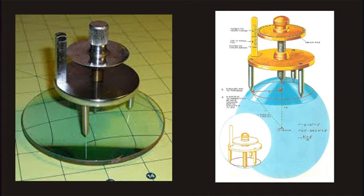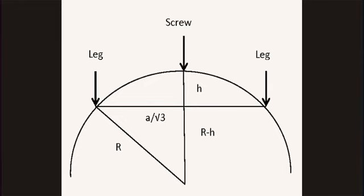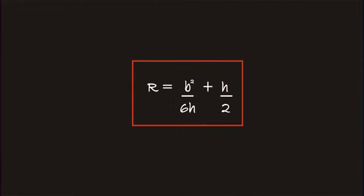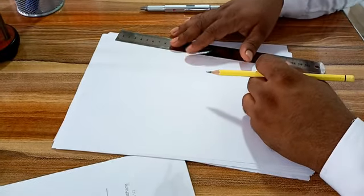The radius of curvature can be determined using a spirometer. h is the measurement of the spirometer and b is the mean distance between two legs of the spirometer. This is how to find the mean distance between two legs.